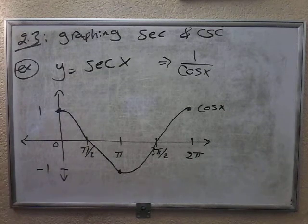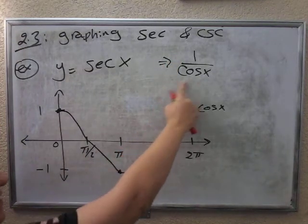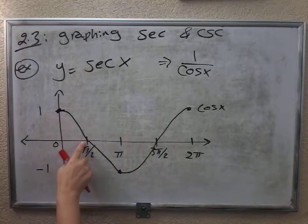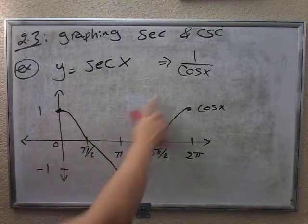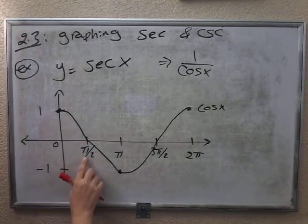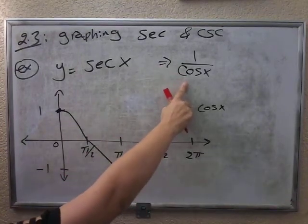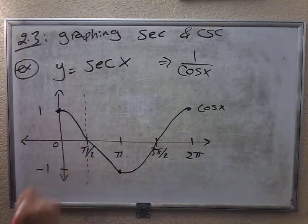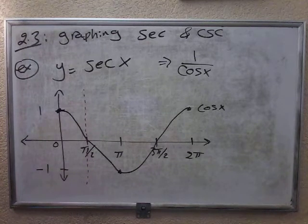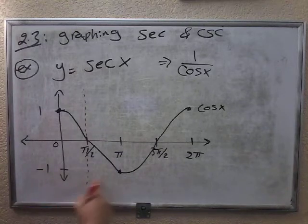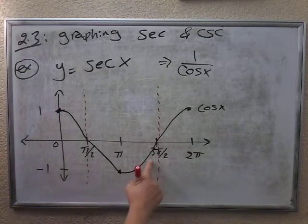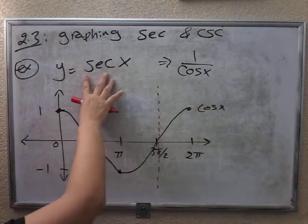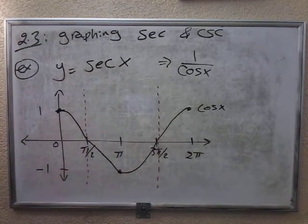Every time you have 1 over cosine and cosine gives you 0, it's going to be undefined. At pi over 2, cosine of pi over 2 is 0, so 1 over 0 is undefined. At pi over 2 plus k pi it's undefined — that's the vertical asymptote, and the domain is all real except these values. The same thing happens at 3 pi over 2 — plug it in for cosecant and it will say undefined there.